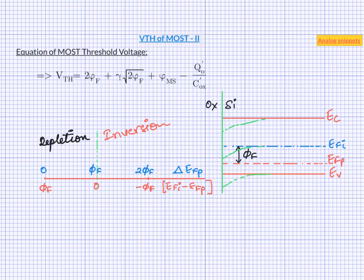Now threshold voltage is defined as the gate voltage which causes surface to be as much n-type as it was p-type to begin with. And that is why we have 2 phi f in the threshold voltage equation. Now inversion region is again divided into 2 regions of operation.